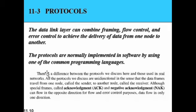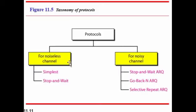The data link layer is acknowledgement-based. It can also use negative acknowledgements, which flow in the opposite direction for flow or error control purposes, while data flows in only one direction. The taxonomy of protocols includes: for noiseless channels — simplest protocol and stop-and-wait protocol; for noisy channels — stop-and-wait ARQ, go-back-N ARQ, and selective repeat ARQ.